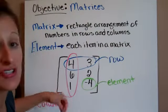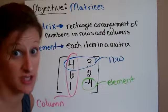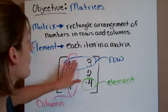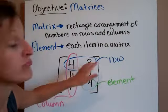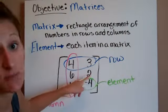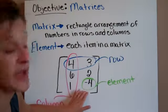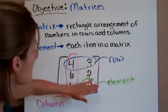In this matrix, all the numbers are known as an element, and an element is each item in a matrix. Your rows are just like in Excel spreadsheets. A row goes across this way. So 4 and 3 are in the same row, 6 and 2 are in the same row, so is 1 and negative 4. This has 3 rows.